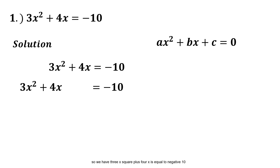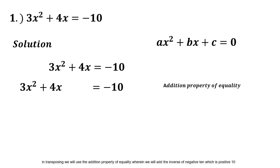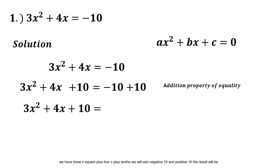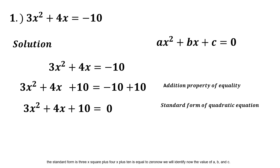So we have 3x² + 4x = -10. In transposing, we will use the addition property of equality, wherein we will add the inverse of negative 10, which is positive 10. Adding +10 to both sides, we get 3x² + 4x + 10 = 0. That is the standard form of the equation.